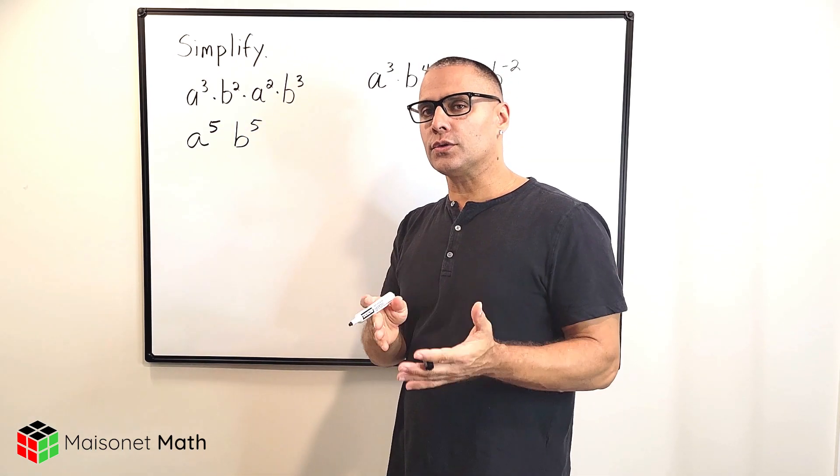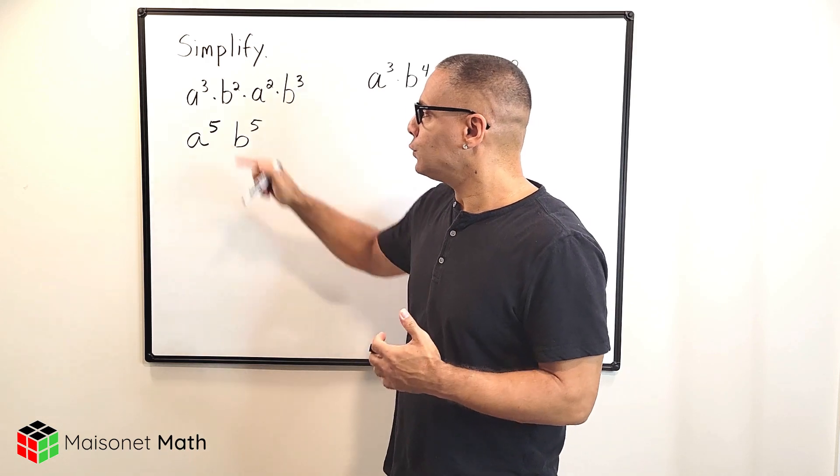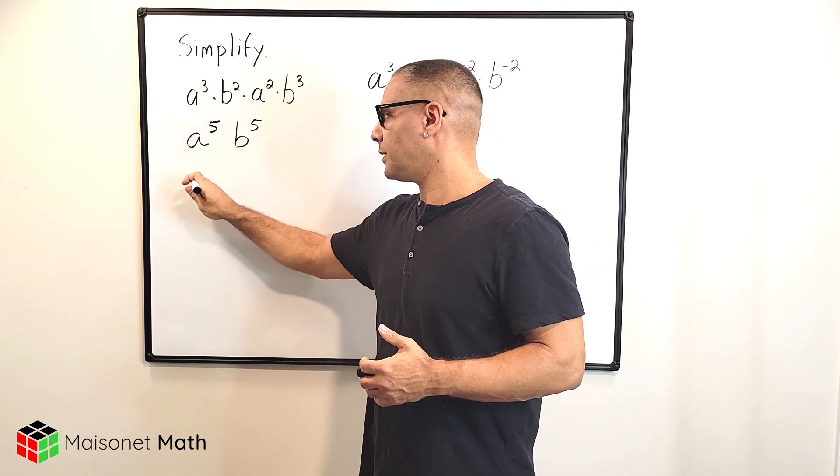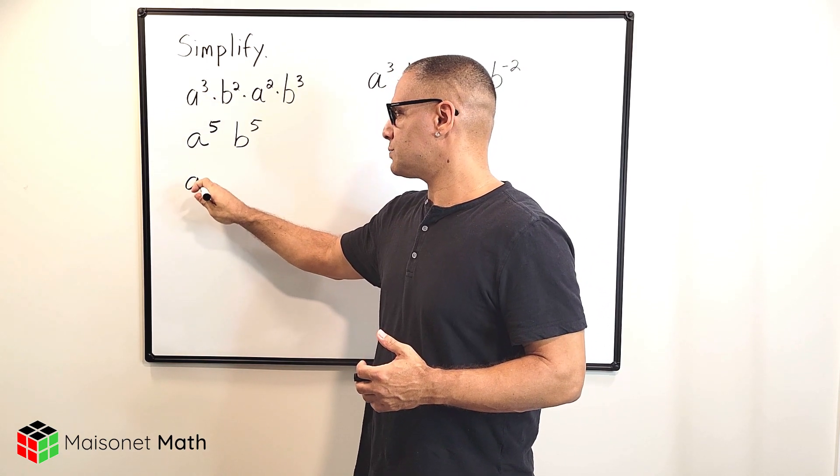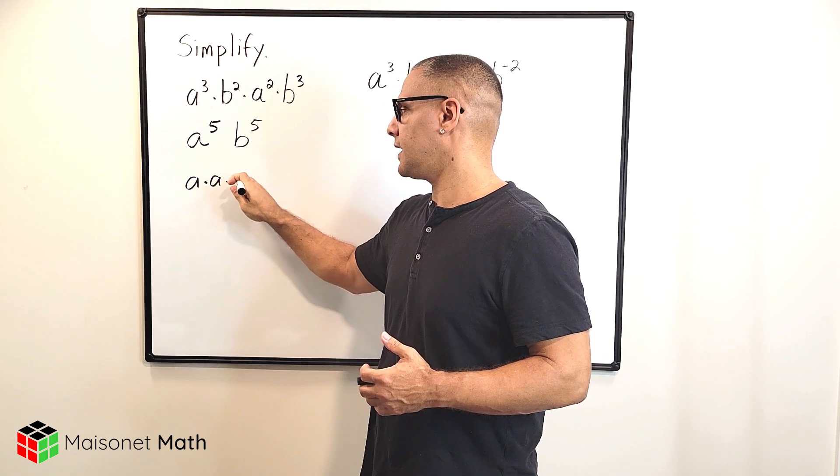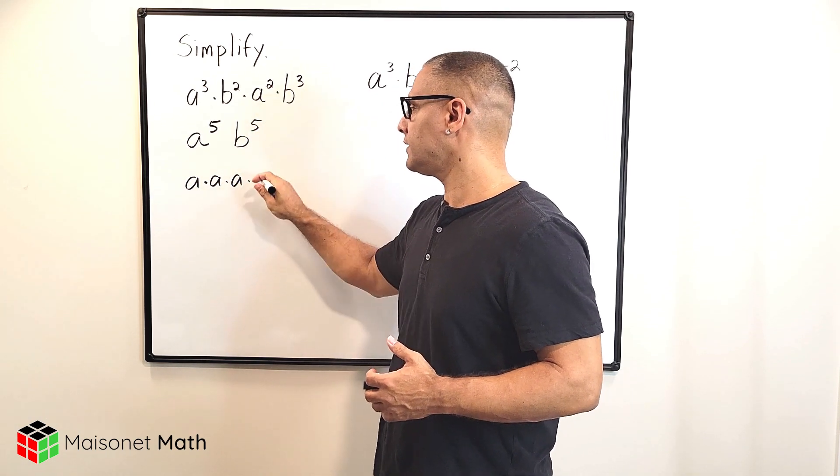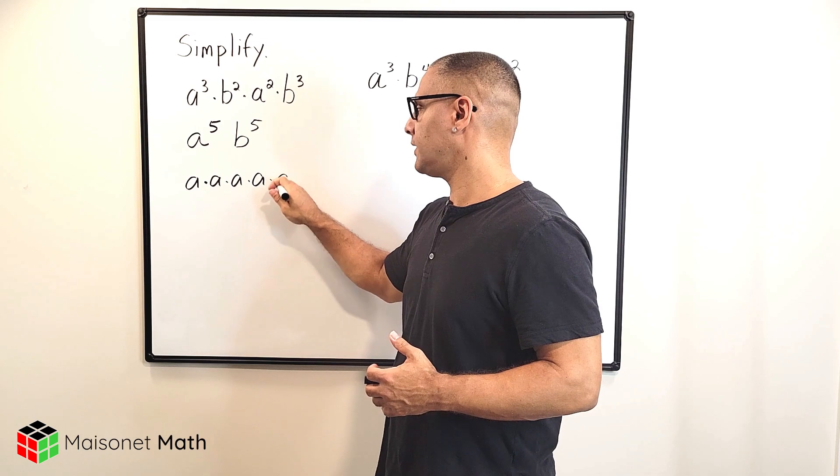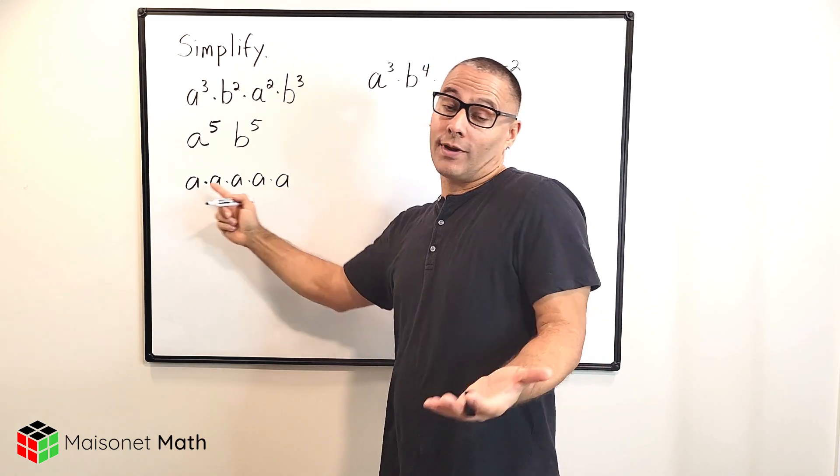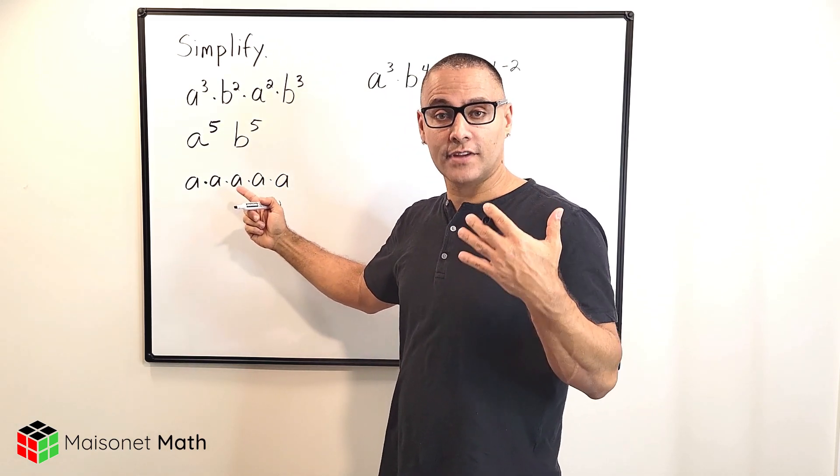Now why is this true? Well it's just because if you write these terms in expanded form, a to the third would just be a times a times a, and a to the second is a times a. So if we write this in exponential form, that would give us a to the fifth.